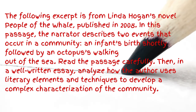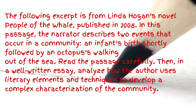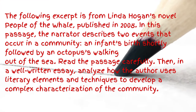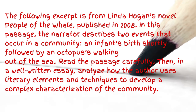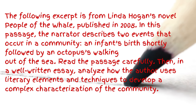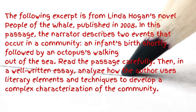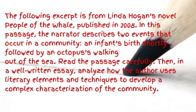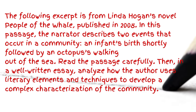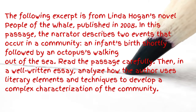The following excerpt is from Linda Hogan's novel People of the Whale, published in 2008. In this passage, the narrator describes two events: an infant's birth shortly followed by an octopus walking out of the sea. The prompt asks you to analyze how the author uses literary elements and techniques to develop a complex characterization of the community. I train my students to read prompts — you can go lit-term hunting. I immediately see there's probably going to be a juxtaposition, and you need to focus on characterization of the community and, by extension, setting.